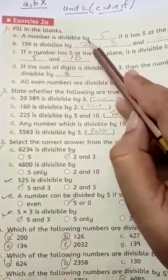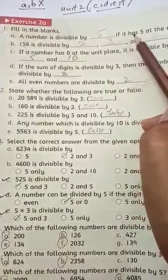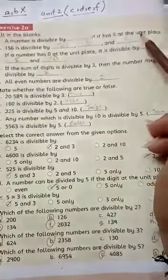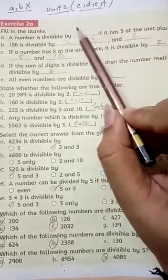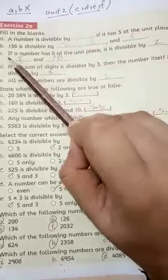A number is divisible by dash if it has 5 at the unit place. When we have 5 at unit place, it will be divisible by 5. Blank B.